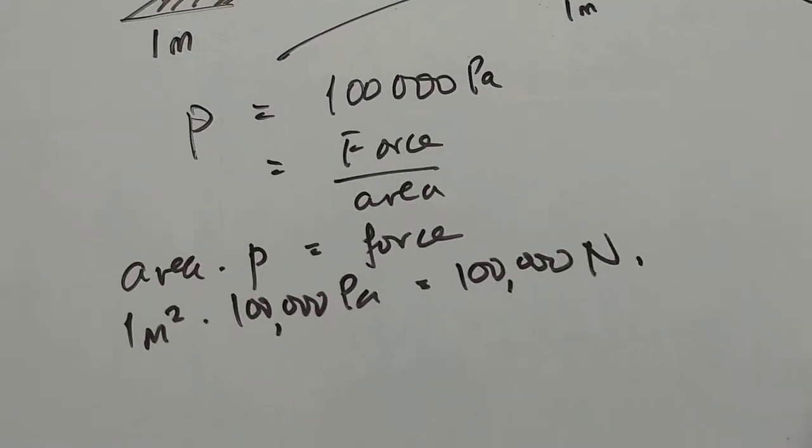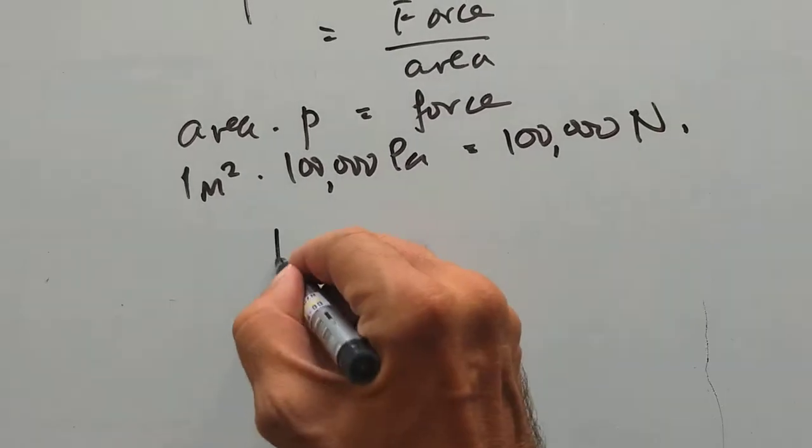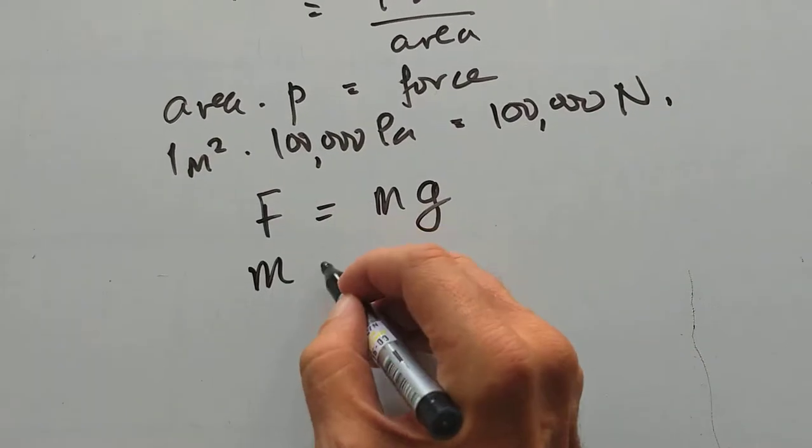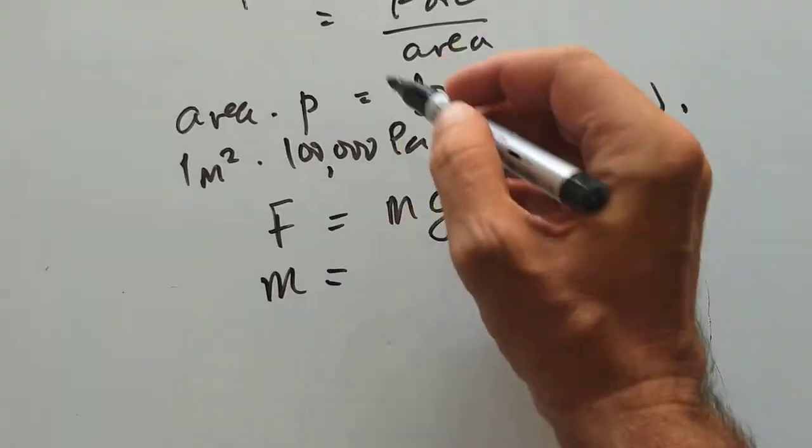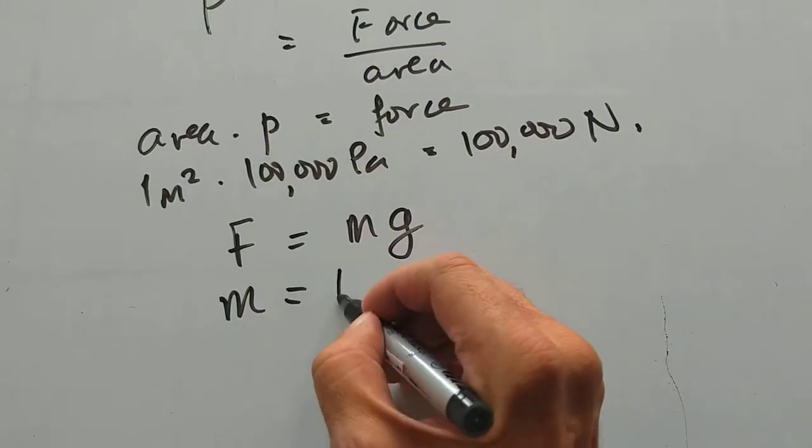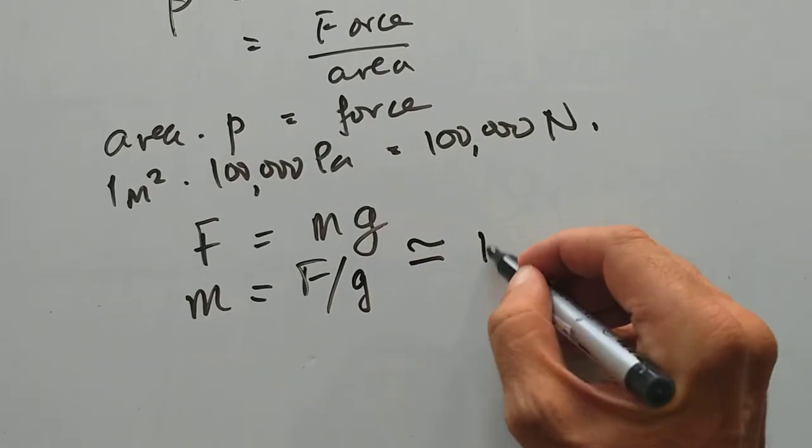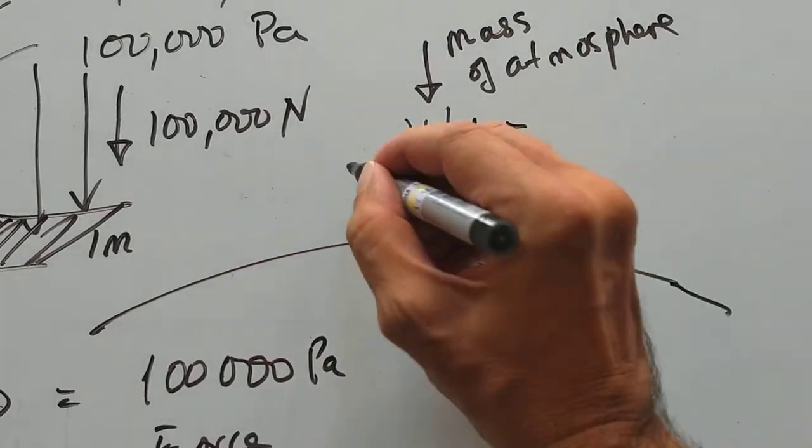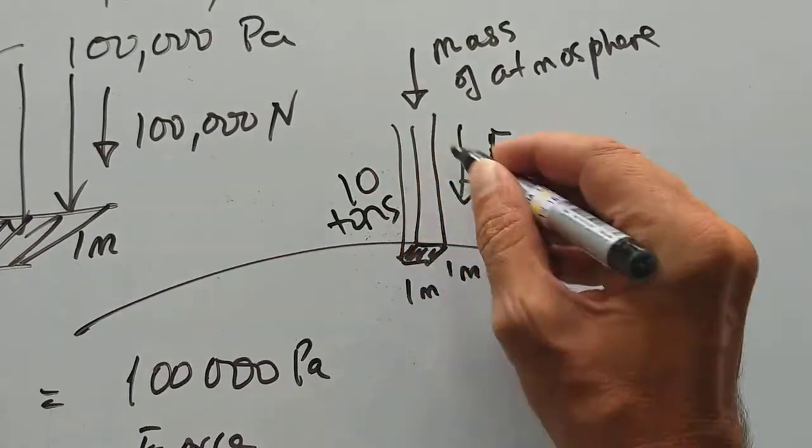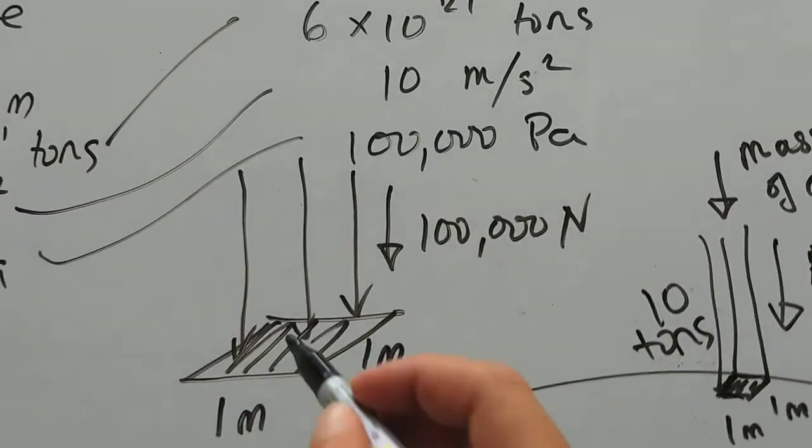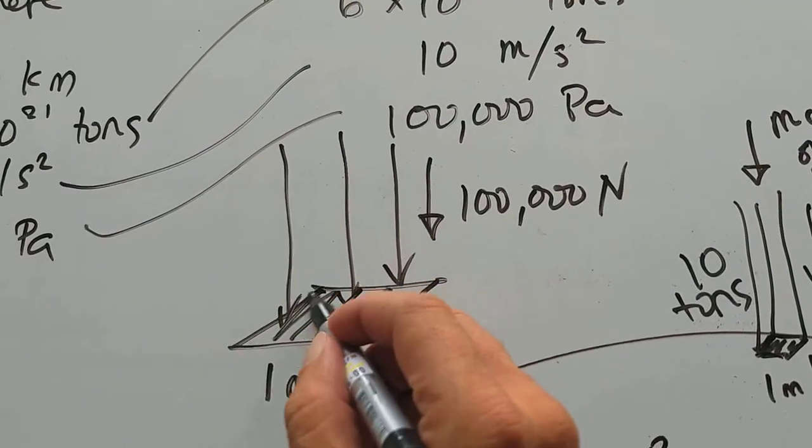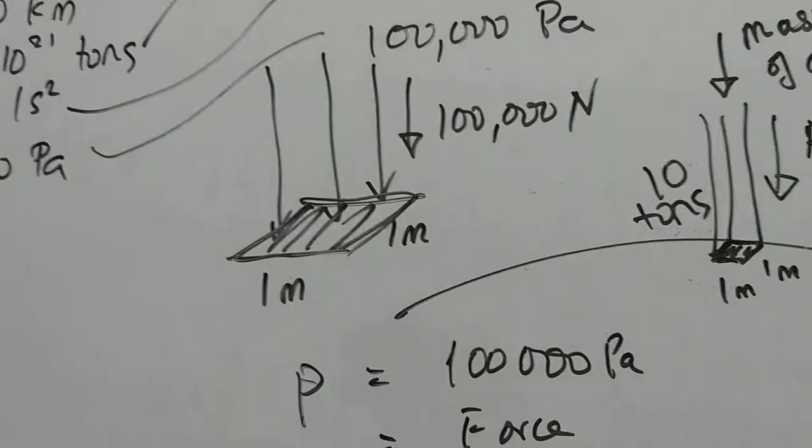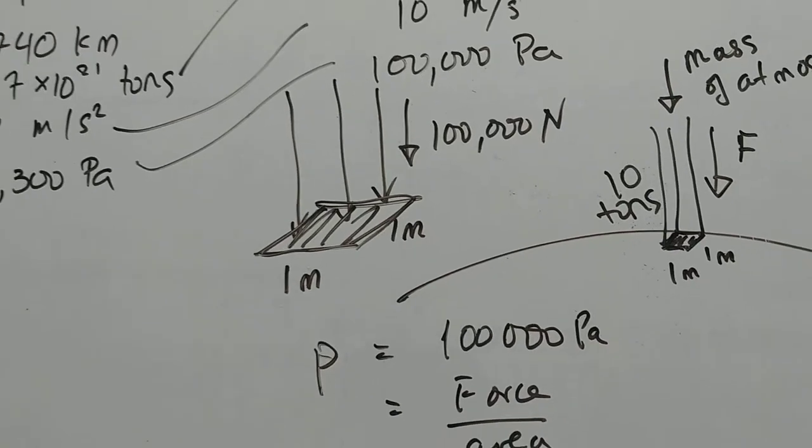How do we figure out the mass that's sitting on top then? Force is mass times acceleration due to gravity. Mass of atmosphere sitting on this is force divided by G, and we can estimate that it's about 10 tons. So on this one square meter, there's 10 tons of atmosphere sitting on top of it. It's quite amazing. Look at one square meter on your floor and imagine 10 tons of atmosphere sitting on top of that.